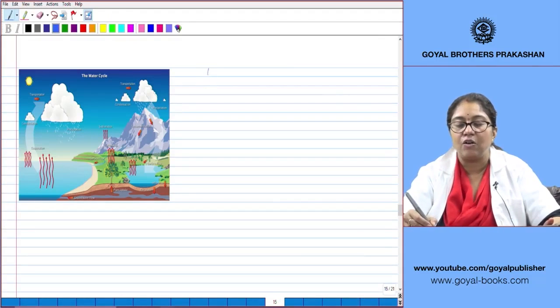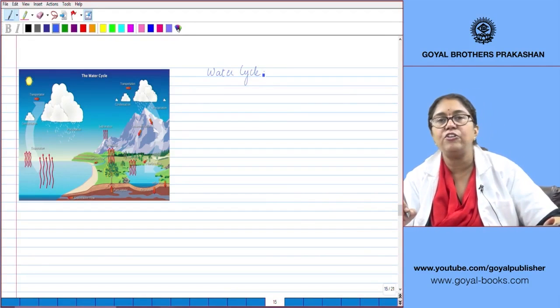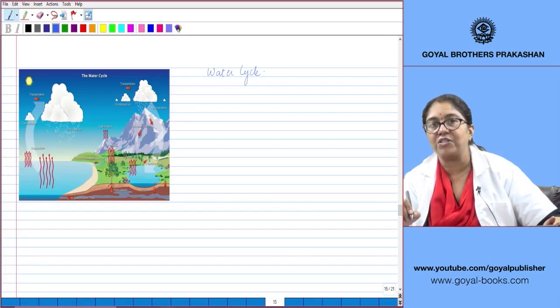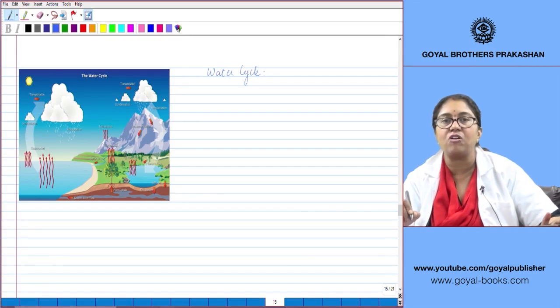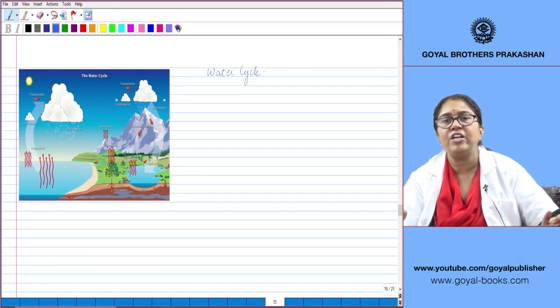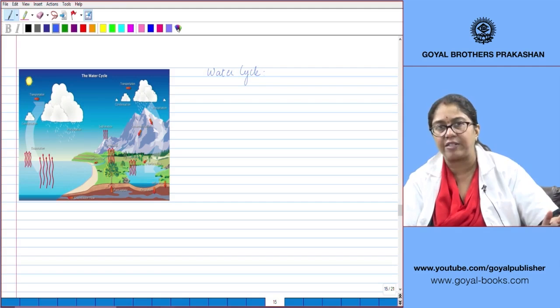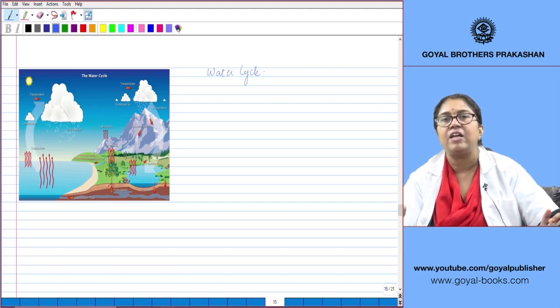Water cycle. The continuous availability of water on our planet is because of the water cycle, which is based on the simple phenomenon of interconversion of states of matter. Basically, water changes its states and converts from one form to another to ensure its continuous availability.